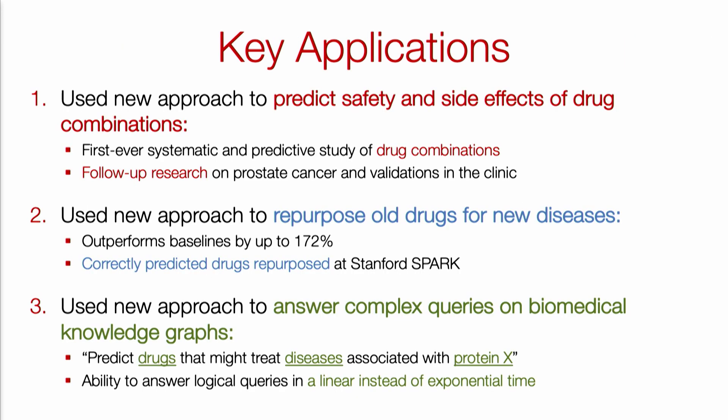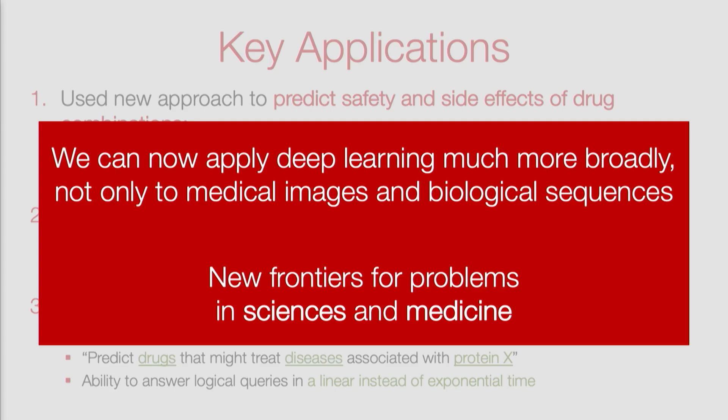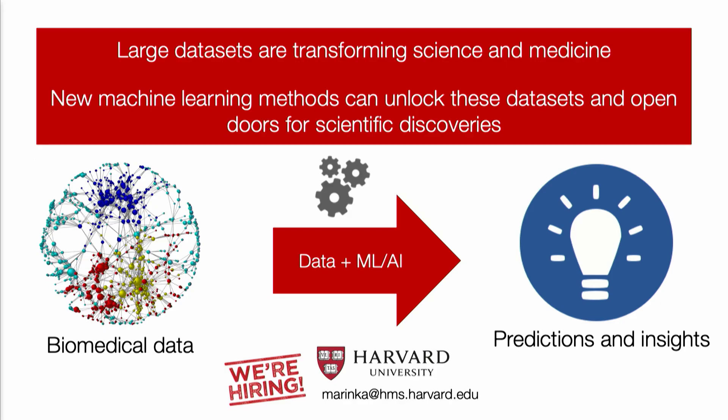Let me conclude by highlighting some other applications enabled by learning high-quality representations for knowledge networks. Beyond drug repurposing at SPARK, we have also employed this technology for predicting safety and side effects of drug combinations — which has led to interesting follow-up research and clinical validations — as well as for designing interactive AI systems that allow domain experts to interact with the model. The main takeaway is that we can now apply deep learning learned representations much more broadly than only to medical images or biological sequences, and this really creates new frontiers for problems in science and medicine. Thank you so much.